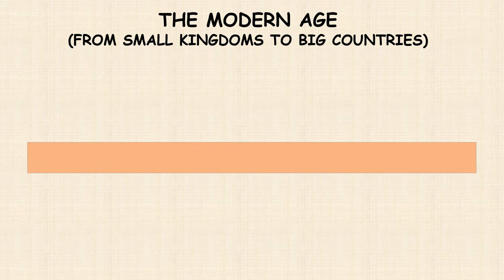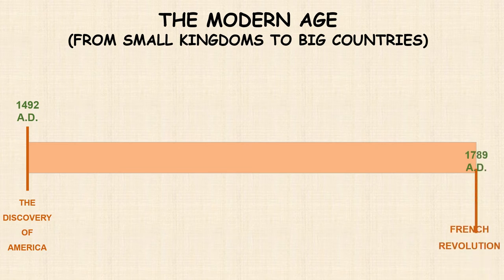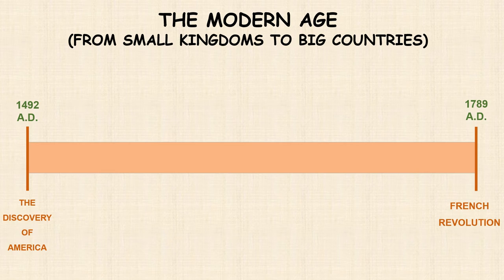The Modern Age is characterized by smaller kingdoms becoming big countries. For example, Spain was born in that age. This period began with the discovery of America in 1492 and finished in 1789 with the French Revolution.